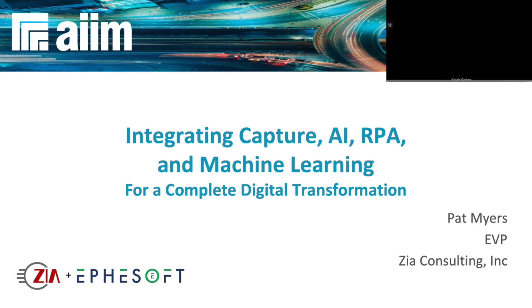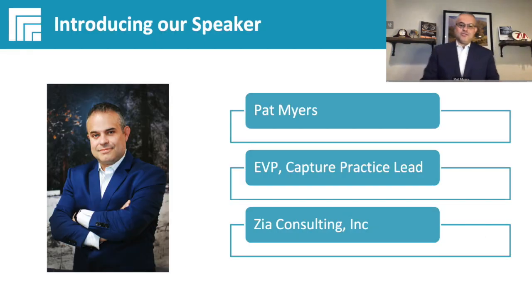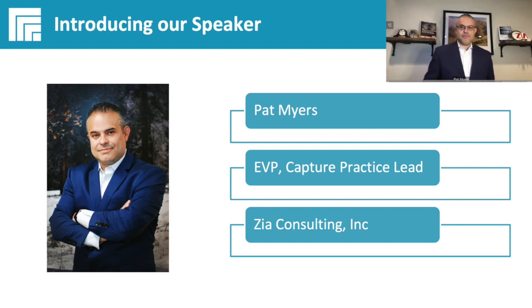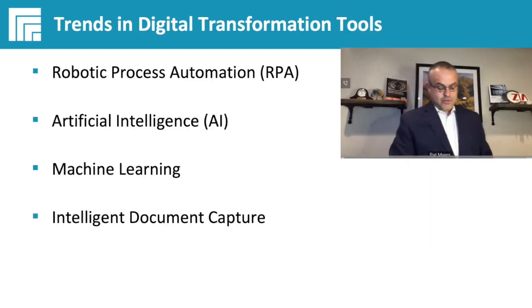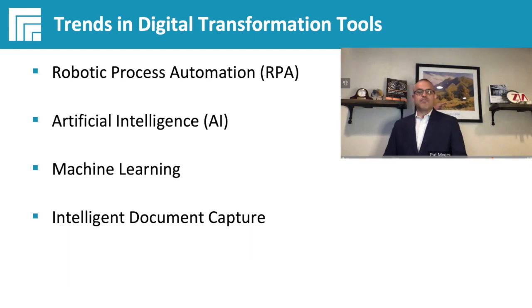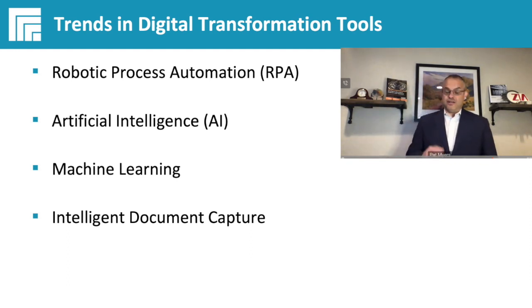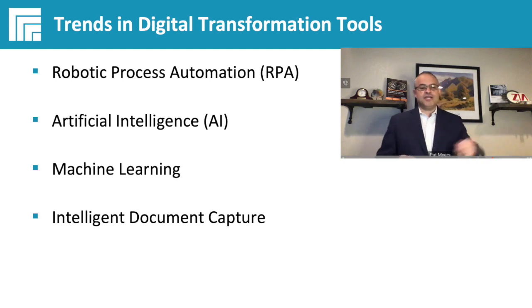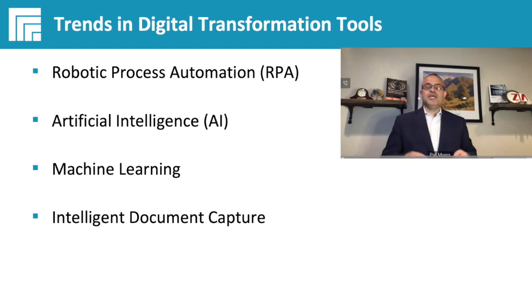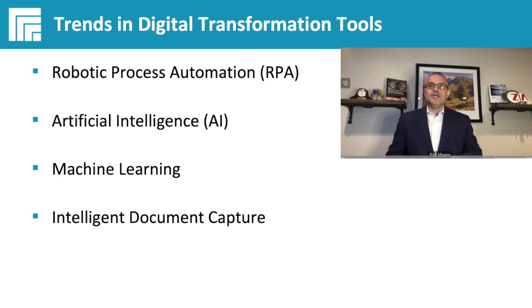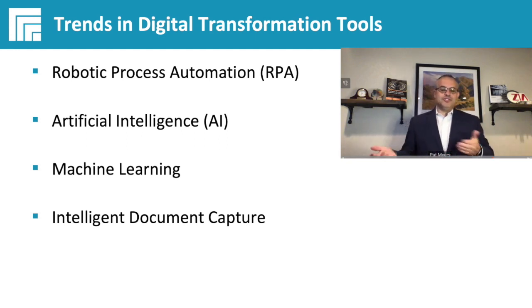Thanks for the intro. I'm here to talk about all those things we've been discussing, and really how we're going to do this integration, because there's more than one piece to the puzzle. So let's first define what those things are. Robotic process automation — RPA — is essentially configuring a robot to emulate simple tasks of a person and interact with digital systems.